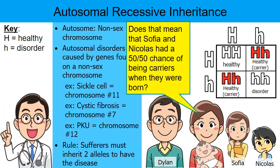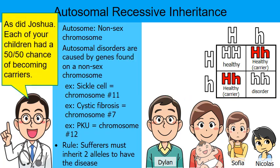Mrs. Henderson asks: does that mean Sophia and Nicholas each had a 50-50 chance of being a carrier when they were born? Looking at the Punnett square, two squares out of four would result in a carrier — a heterozygous individual. The doctor says yes, as did Joshua. Joshua had a 50-50 chance of being a carrier as well. Unfortunately, it didn't work that way for him — Joshua inherited the disorder.